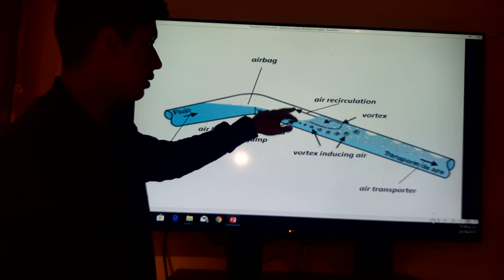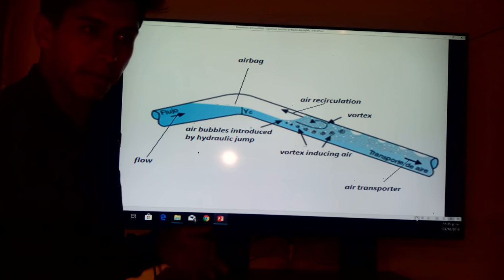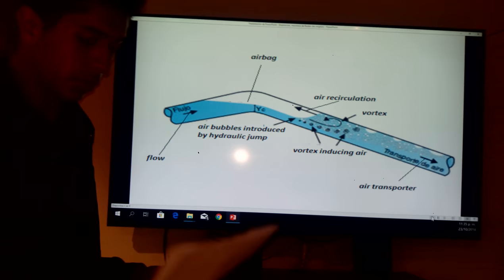Air circulation in this point of the airbag and vortex in the final parts of tube transports air to the final point of tube.